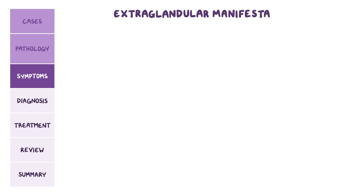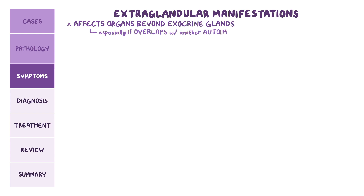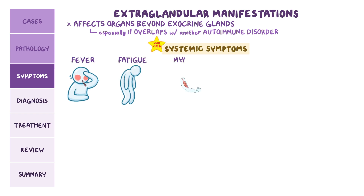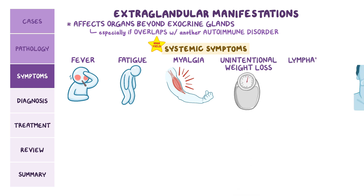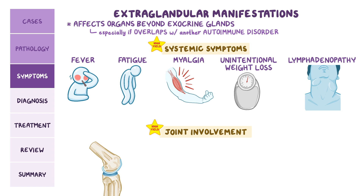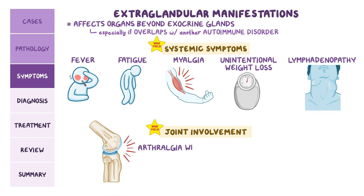Extraglandular manifestations occur when the syndrome affects organs beyond the exocrine glands, especially if it overlaps with another autoimmune disorder. Systemic symptoms can include fever, fatigue, myalgia or muscle pain, unintentional weight loss, and lymphadenopathy. Joint involvement is typically manifested as arthralgia, or joint pain, with or without inflammatory arthritis, and it actually occurs in 50% of people with Sjogren's syndrome.